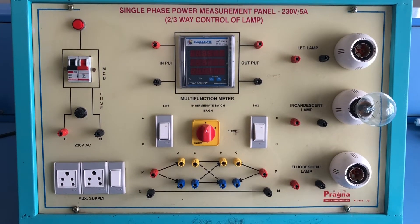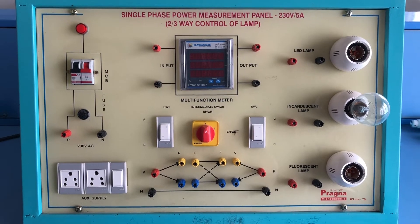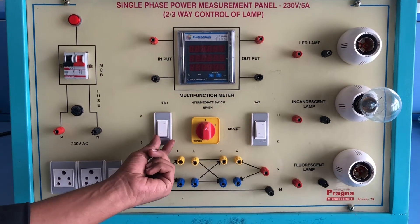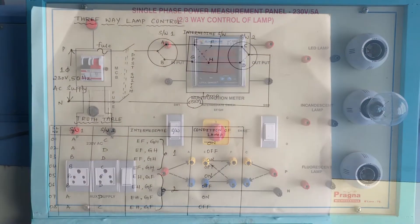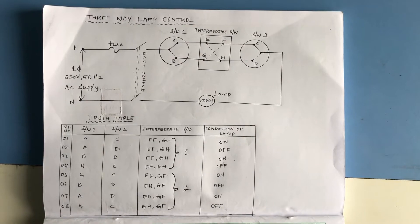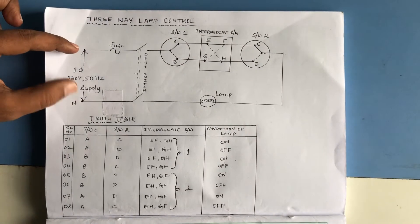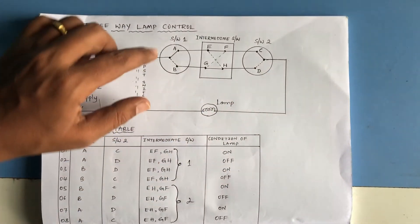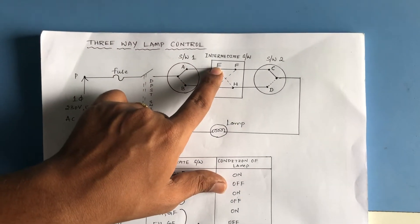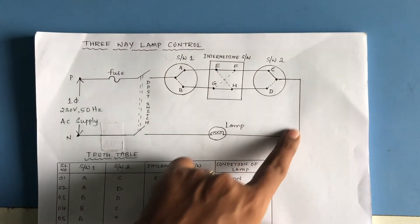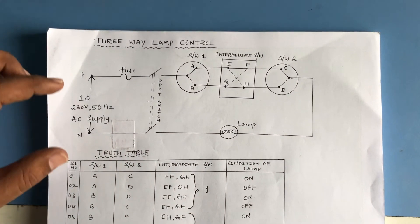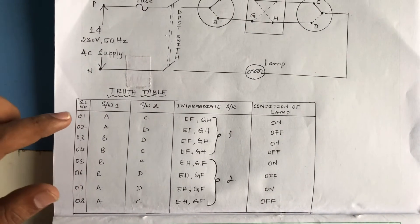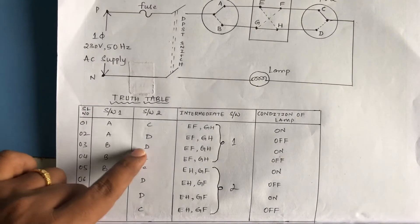The main aim of this experiment is to understand how a single lamp can be controlled by three switches. In the circuit diagram, the source is connected to three switches: switch 1, an intermediate switch, and switch 2, which is connected to the lamp. We have to verify the truth table for different switch positions.